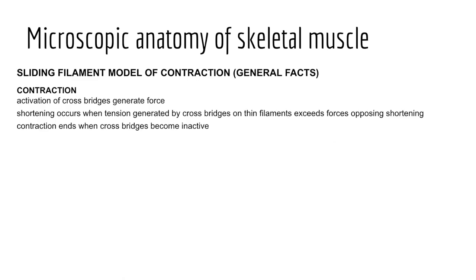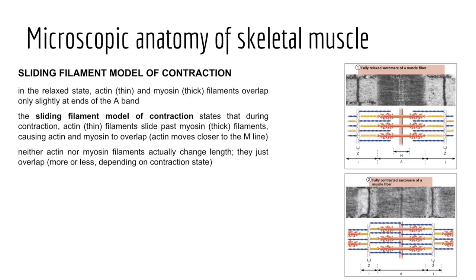Now that we've considered microscopic anatomy and sarcomere proteins, let's talk about how a muscle contracts. Contraction is the process of creating cross bridges — joining actin and myosin heads together to generate force. This occurs when calcium levels within the sarcomere are high, resulting in calcium binding with troponin, moving tropomyosin out of the myosin binding sites on actin to permit myosin to bind, creating the cross bridge. Shortening of sarcomeres occurs as myosin pulls actin toward the M-line, bringing Z-discs closer together. Contraction ends when cross bridges become inactive, when calcium levels are low.